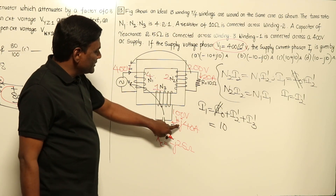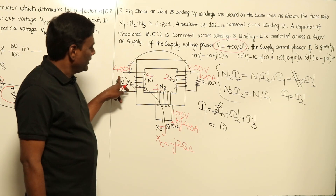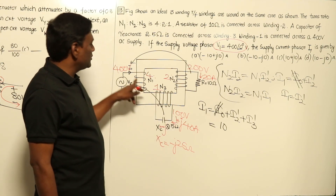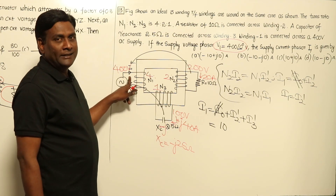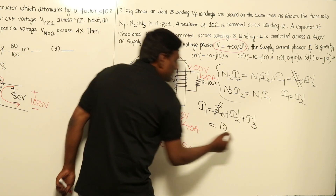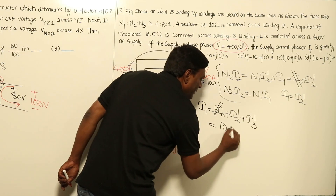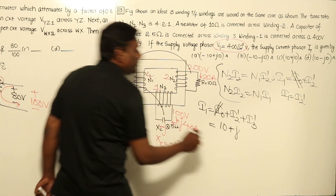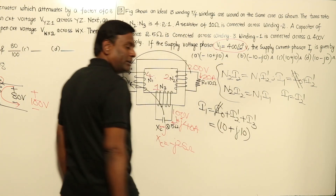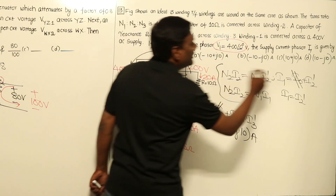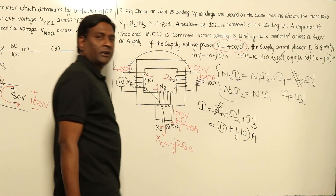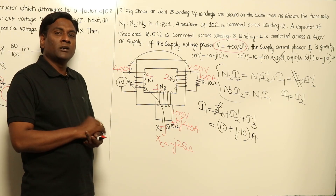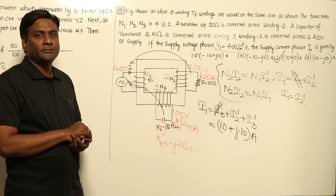Reflecting the tertiary current from LV (100 V) to HV (400 V): current reduces by a factor of 4, so I3' = 40 ÷ 4 = +j10 amperes. Therefore, the total primary current I1 = I2' + I3' = 10 + j10 amperes. Even without prior discussion of three-winding transformers, we can solve such problems.